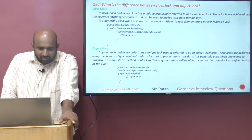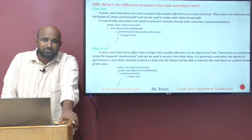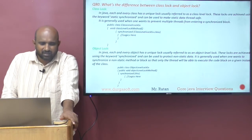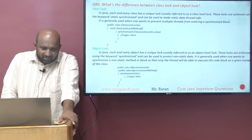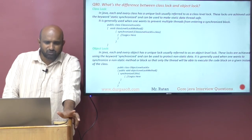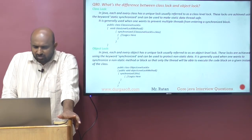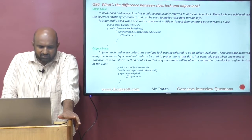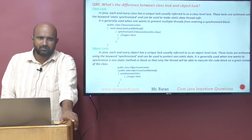If the argument is the `this` keyword, that is called the object level lock, which refers to the current class object. In Java, each and every class has a unique lock, usually referred to as the class level lock. These locks are achieved using the keyword static synchronized, and it can be used to make static data thread safe.